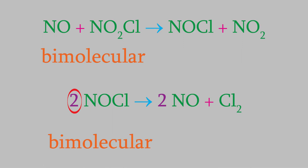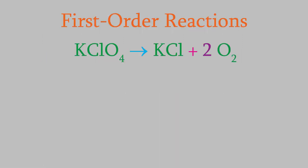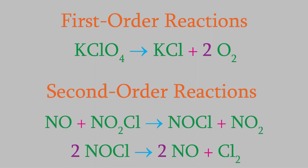So far, we looked at a first order reaction that's unimolecular, and two different second order reactions that are bimolecular. This might lead you to believe that the reaction order always tells us what the molecularity of the reaction must be, and vice versa. But that's not the case. Here's why.